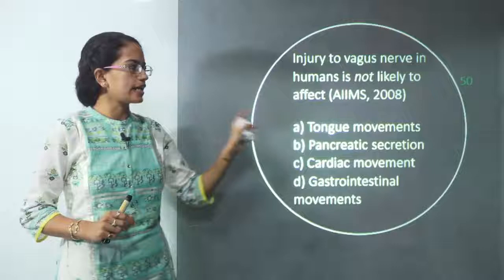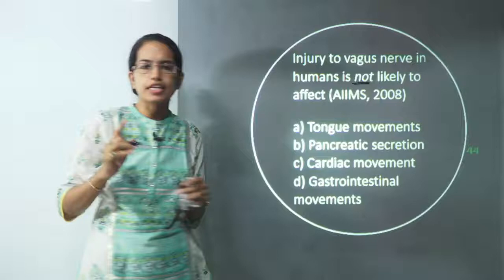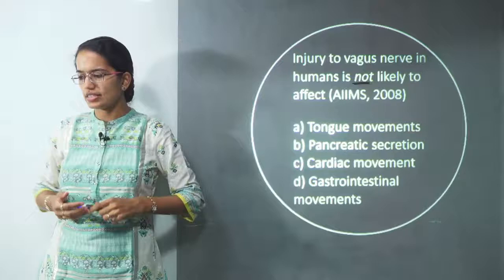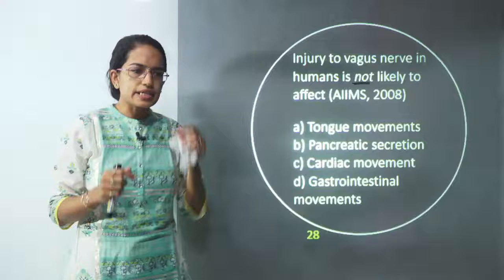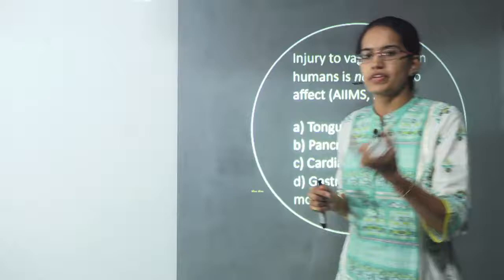The question asks: injury to the vagus nerve in humans is NOT likely to affect — make sure you read the word NOT very carefully. Sangha, answer A — that's a very correct answer. Vagus nerves are also called pneumogastric nerves. 'Pneumo' means lungs, 'gastric' relates to the digestive system.